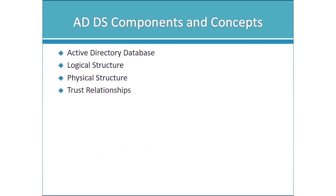With that definition of the Active Directory domain behind us, let's talk about components and concepts within Active Directory domain services. At the heart of AD is a physical database — a directory database that stores information about users, computers, groups, and other objects. Active Directory has both a logical and a physical structure. The logical structure controls the organization — the forest, trees, domains, and OUs. The physical structure is the database itself — the partitions, sites, global catalog servers, and the like. We'll also talk about trust relationships, though we won't revisit that until we get into more complex Active Directory environments.